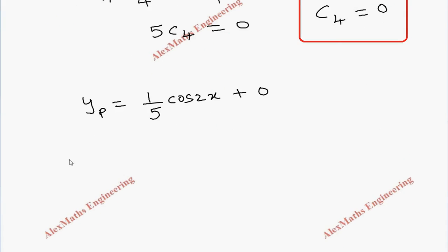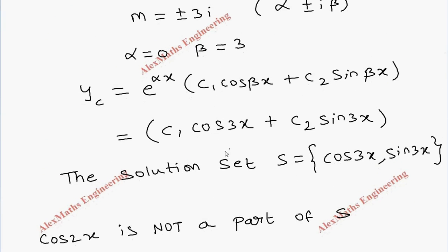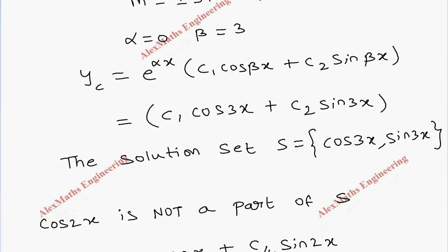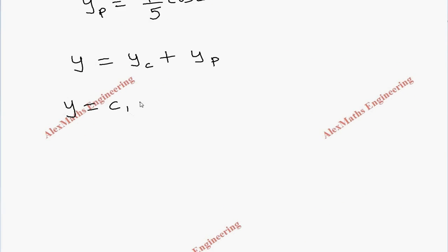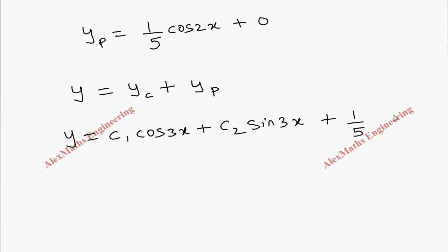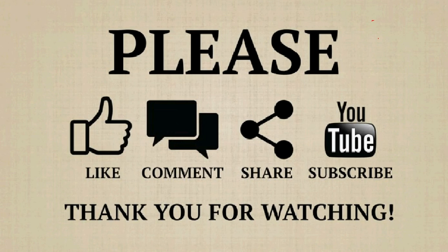Now we have to write the complete solution which is made up of the complementary function and the particular integral. So the value of y, the complete solution, is c1 cos 3x plus c2 sin 3x plus 1 by 5 cos 2x.